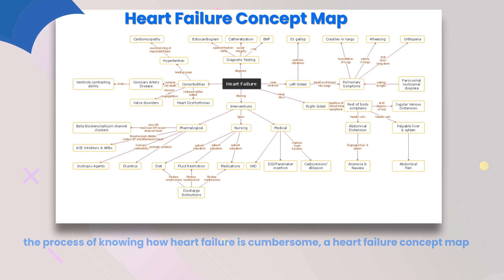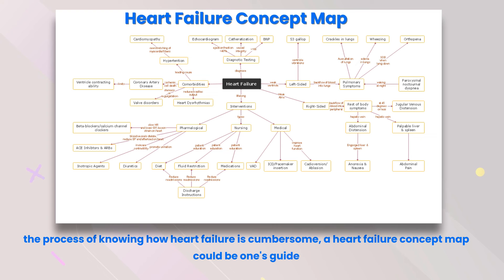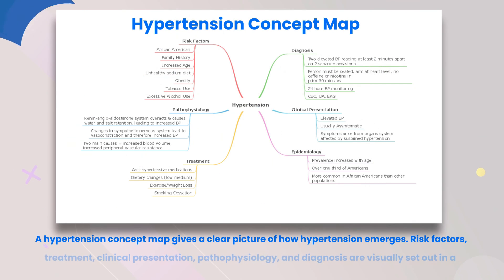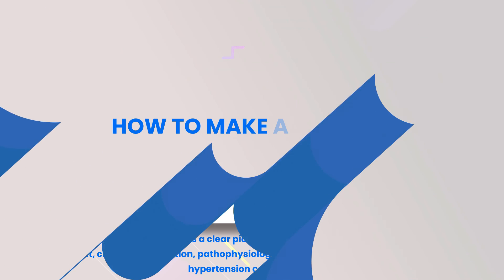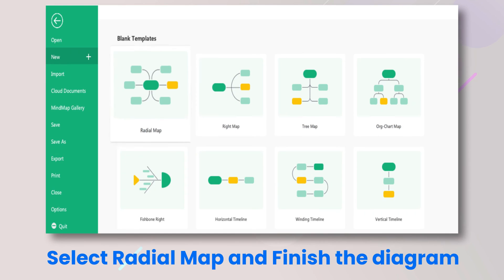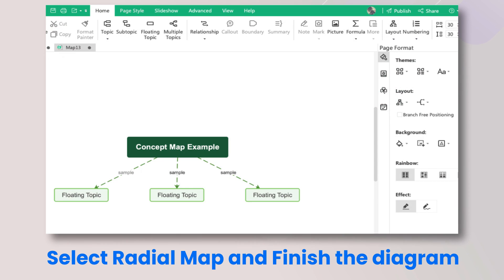Asthma concept map: through the asthma concept map, all the possibilities of an attack are put forward. Heart failure concept map: the process of knowing how heart failure works is cumbersome, and a heart failure concept map could be one's guide. Hypertension concept map: a hypertension concept map gives a clear picture of how hypertension emerges — risk factors, treatment, clinical presentation, pathophysiology, and diagnosis are visually set out. To make a concept map, select a radial map and finish the diagram.